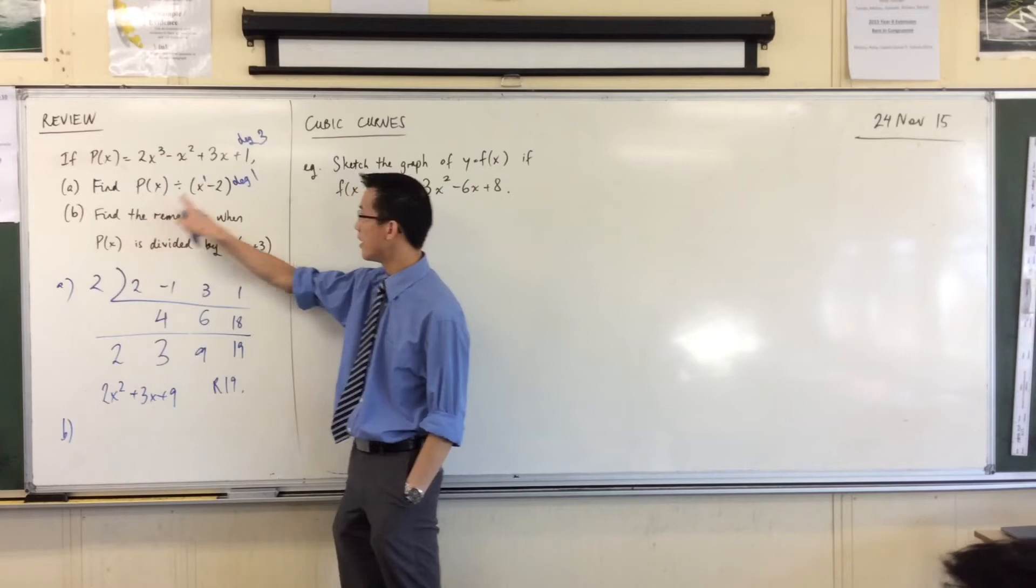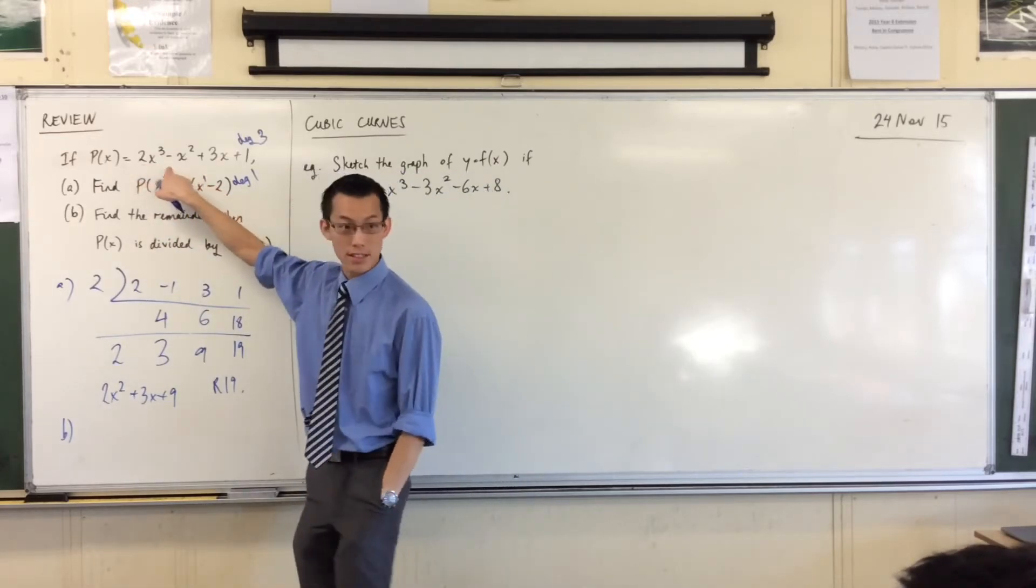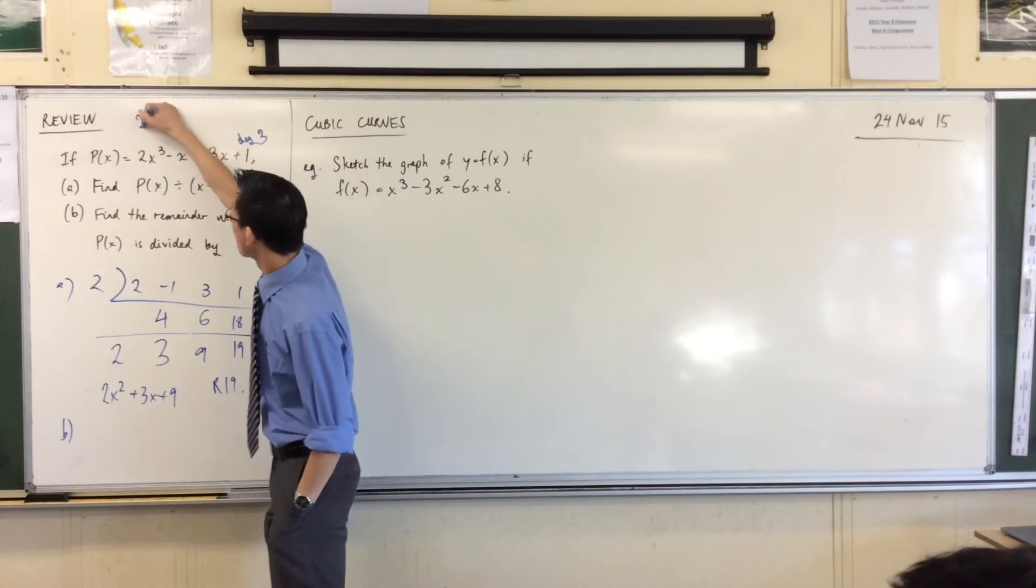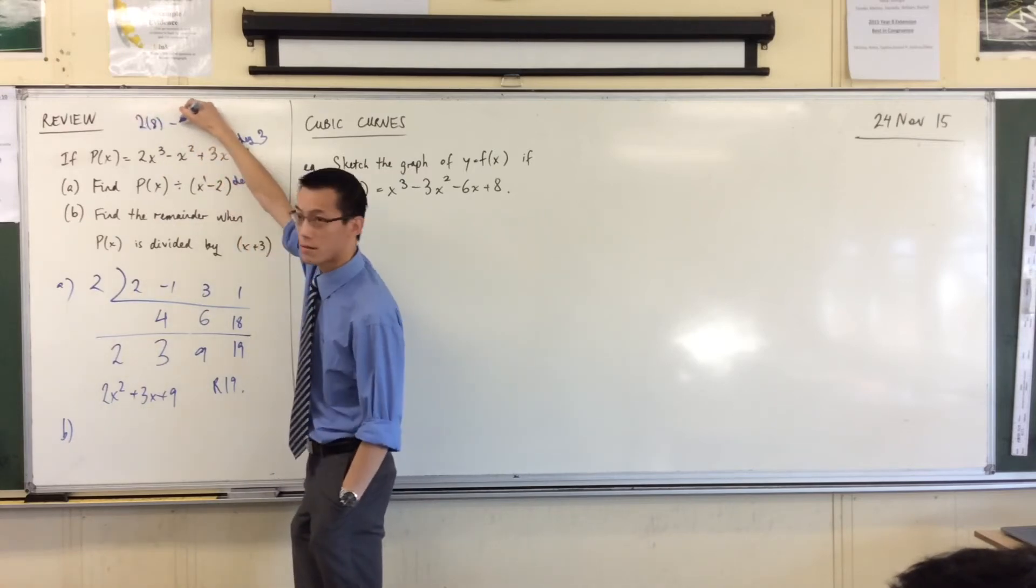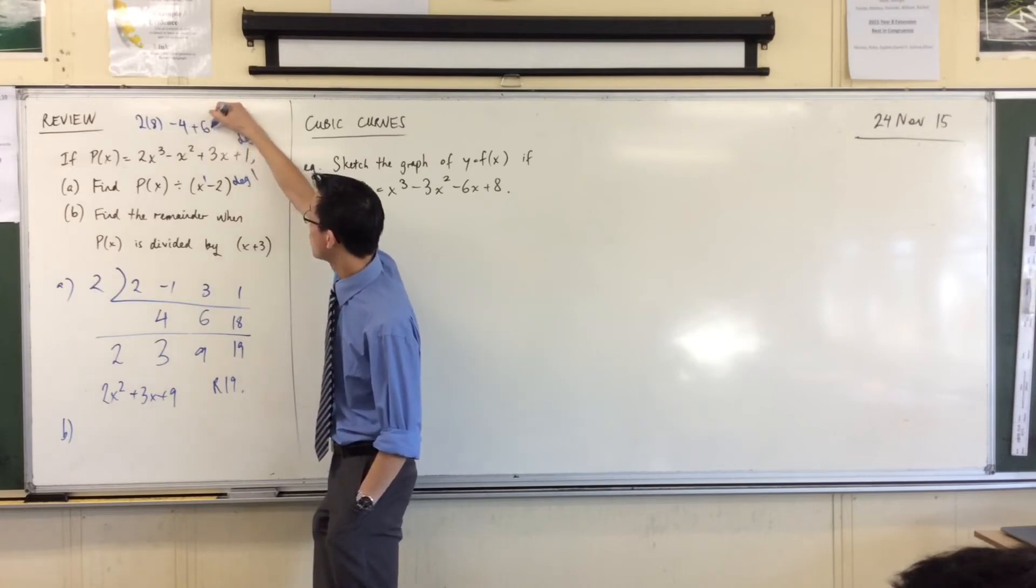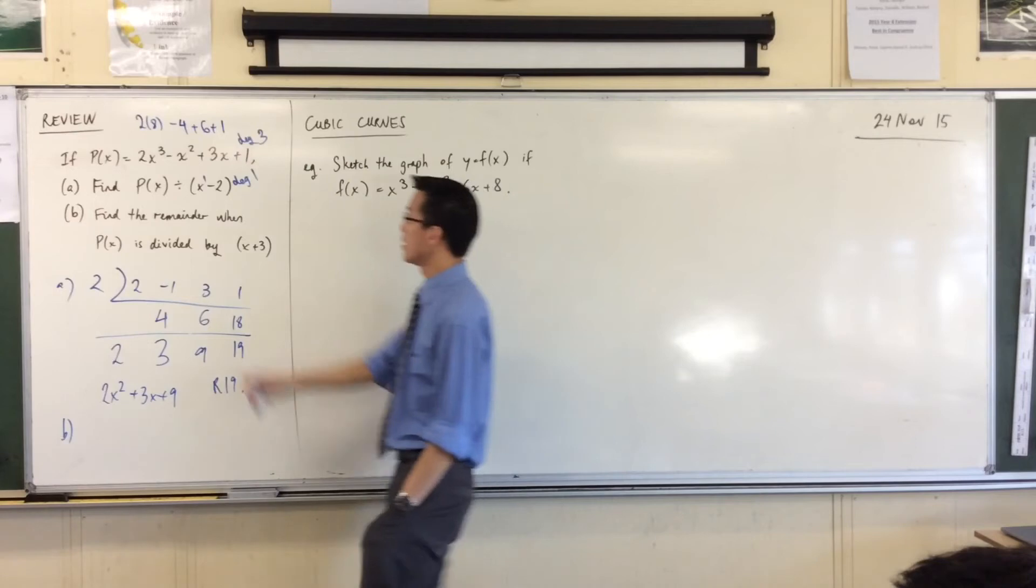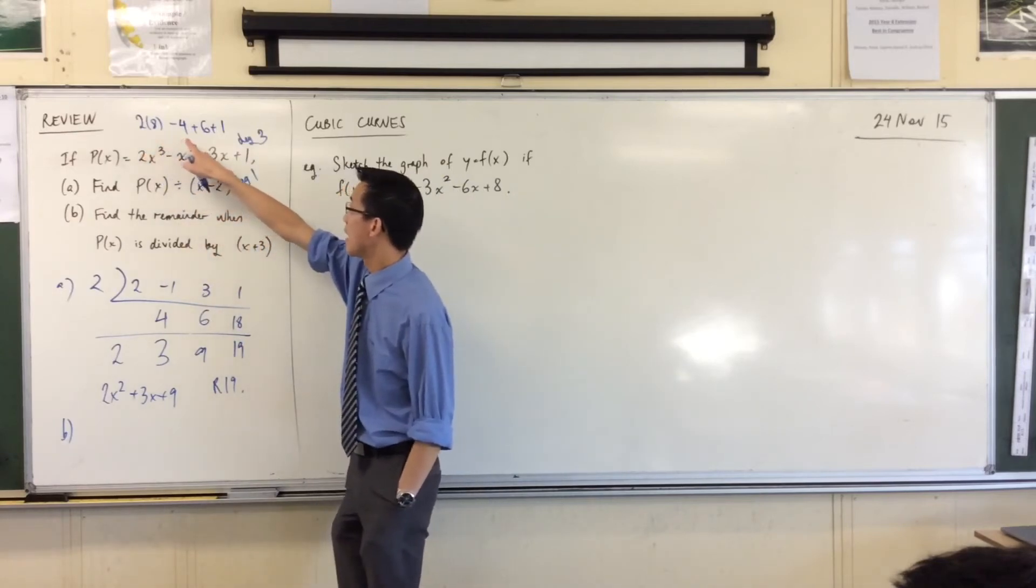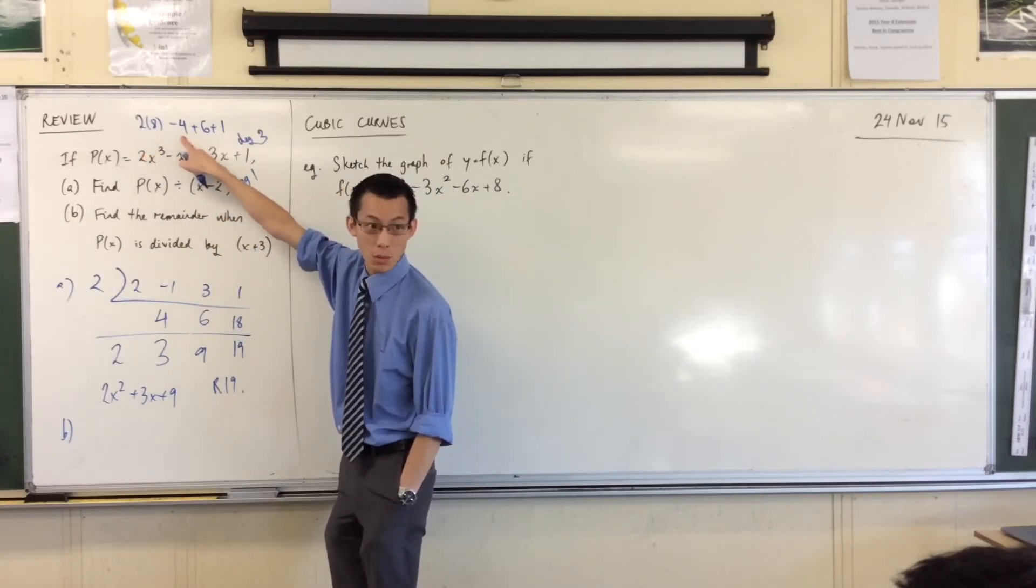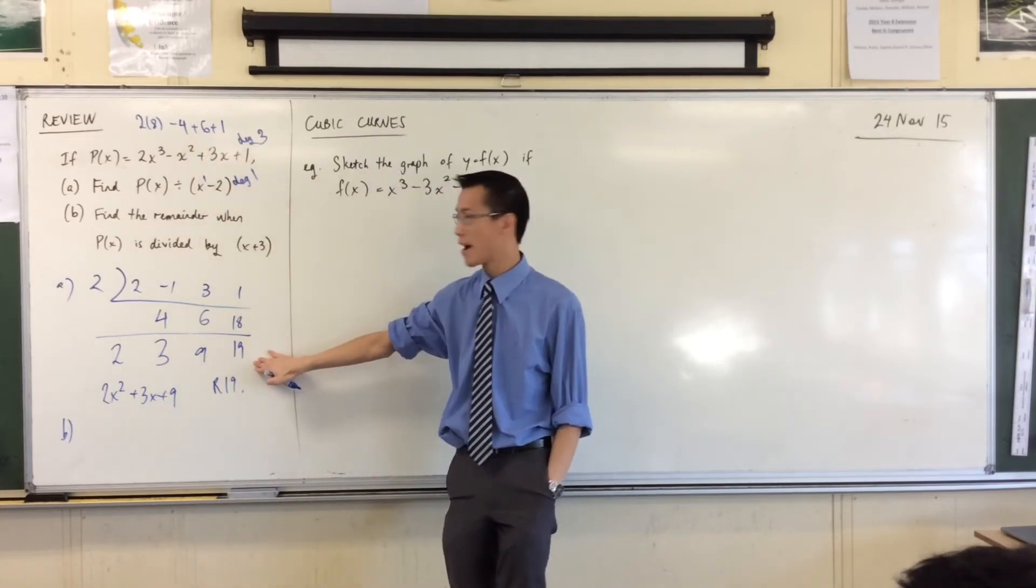If I had just put in x equals 2 into here, you would have got, let's just quickly crunch this out, right? You would have got 2 times 8 minus 2 squared, which is 4, plus 3 times 2, which is 6, plus 1, okay? So you're getting 16 take away 4, which is 12, plus 7, which is 19. That's the remainder I ended up with, right?